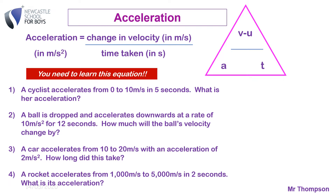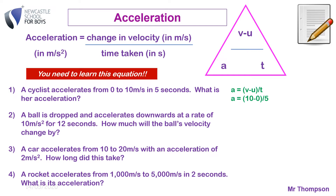Here are some examples. Number one: a cyclist accelerates from 0 to 10 meters per second in five seconds. What is her acceleration? You use the equation A equals the change in velocity over time. The change in velocity is 10 minus 0, so it's 10 meters per second in five seconds. The answer is 2 meters per second squared. Think about it — it's how many meters per second change in a second, so you write this as meters per second per second, or usually meters per second squared. That means the cyclist increases their velocity by 2 meters per second every second.